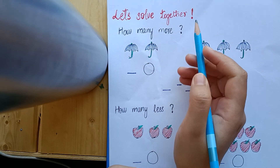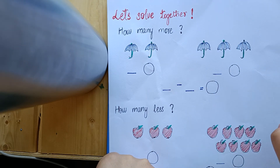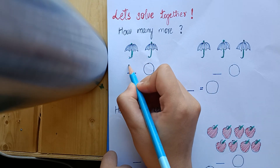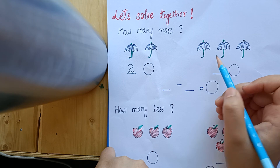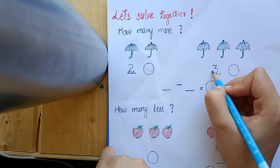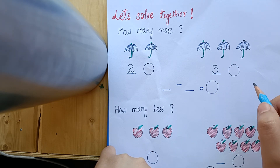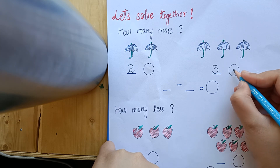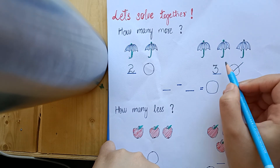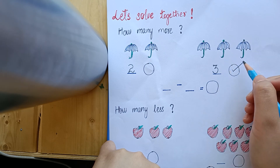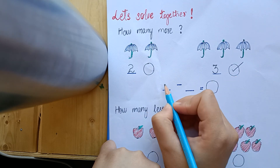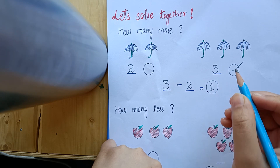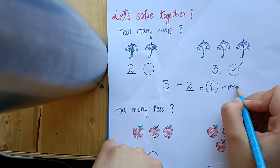First we will explain how many more. We need to click the collection which is more. So first let's count — umbrellas are shown here. Count the first collection: one, two — so we have two. And count the second: one, two, three. We need to click the collection which has more. So where is more — two or three? Yes, you are right, three is more, so we will click it. Now, bigger number minus smaller number: three minus two equals one. So in this collection there is one umbrella more as compared to this one.